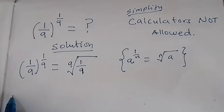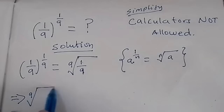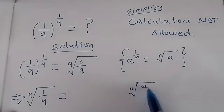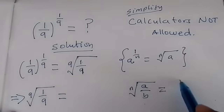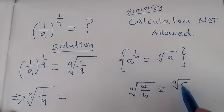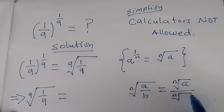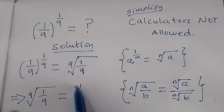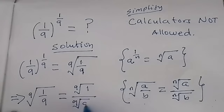Now we have the 9th root of 1 over 9. Here we apply the rule that the nth root of a over p is the same as the nth root of the numerator over the nth root of the denominator. So this is the same as the 9th root of 1 over the 9th root of 9.